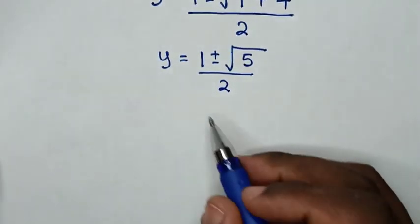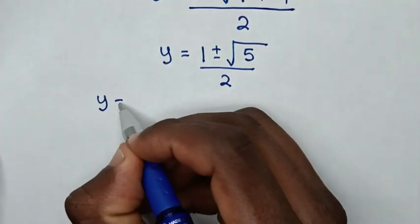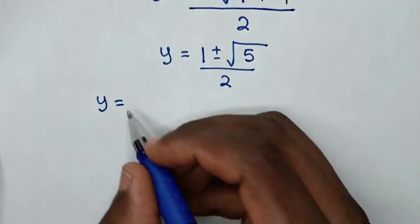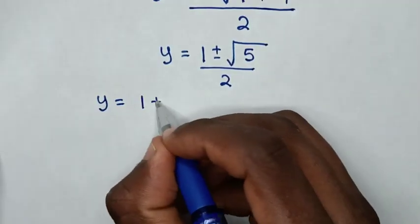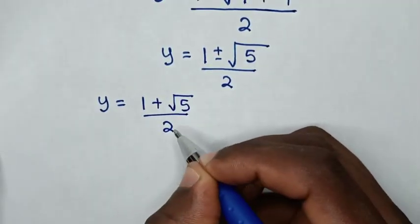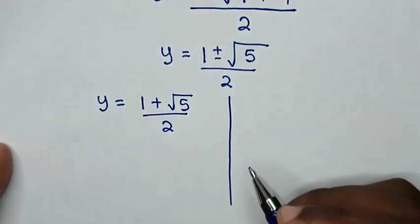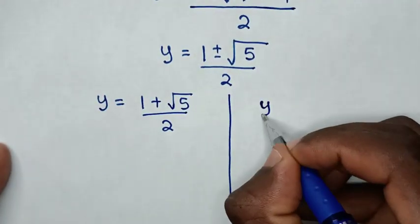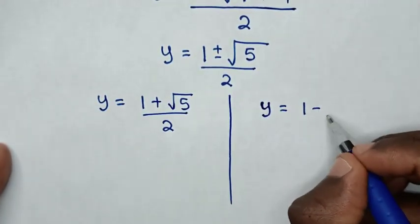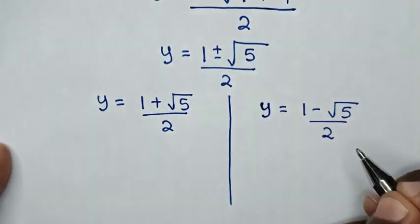From here, we have two solutions for y. The first solution, when positive, is y = (1 + √5) / 2. The second solution, when negative, is y = (1 − √5) / 2.